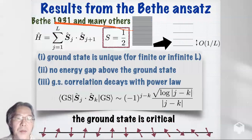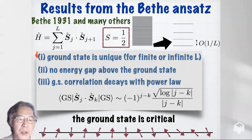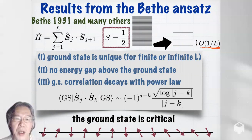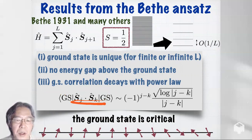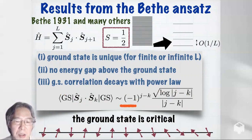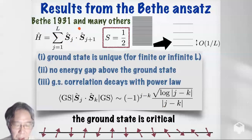For the simplest case of spin-one-half, there is the famous Bethe Ansatz method, invented by Hans Bethe in 1931. With this method we understand a lot about the ground state and low-energy properties. The ground state is unique and there is no energy gap above the ground state energy — the spectrum is essentially continuous in the thermodynamic limit. The ground state correlation function decays as a power law, approximately 1 over the distance with an oscillating factor. So the ground state is critical in this case.